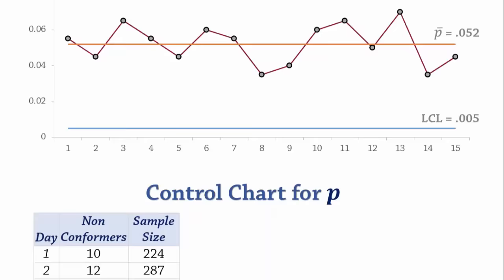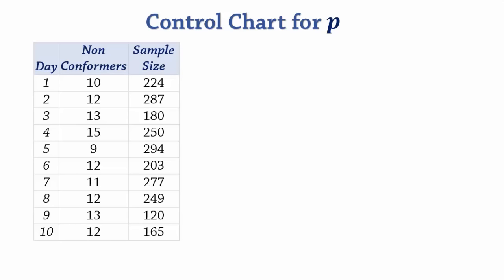Let's look at a second example where the sample sizes are not all the same. The sum of the non-conformers or defectives is 119, while the total sample size is 2249. That gives us an overall proportion or p-bar of 0.053, and that makes q-bar 0.947.